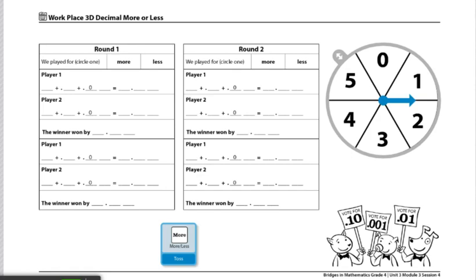Players will spin the more or less spinner, and the player with the larger number will go first. I toss the die and got more, then I spun the spinner and got a four.